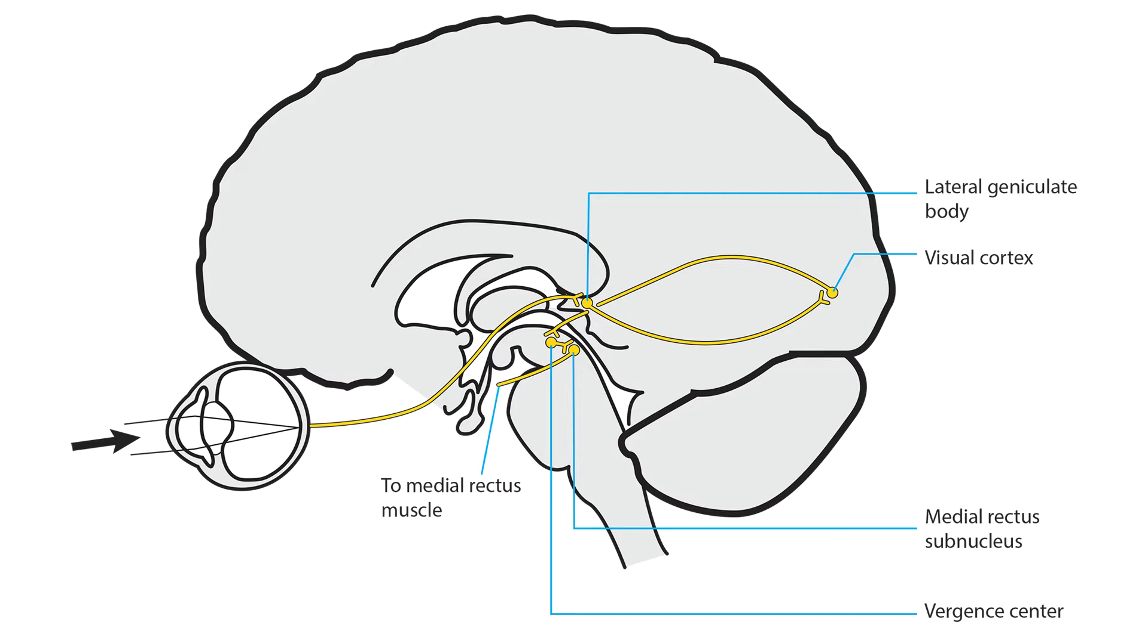The signal goes first to the primary visual cortex. As the target approaches, momentary double vision occurs. That momentary double vision activates neurons in the visual cortex.